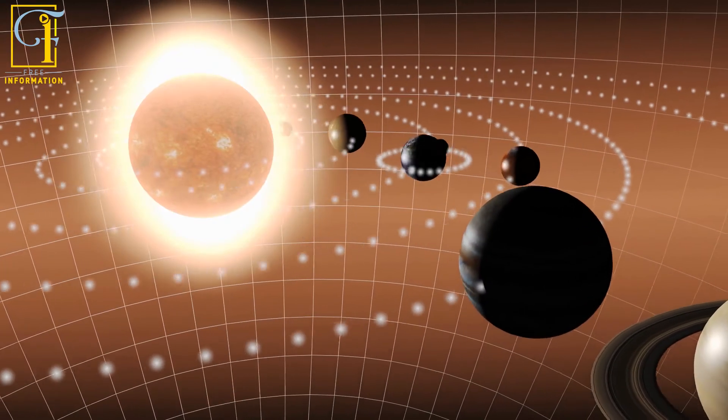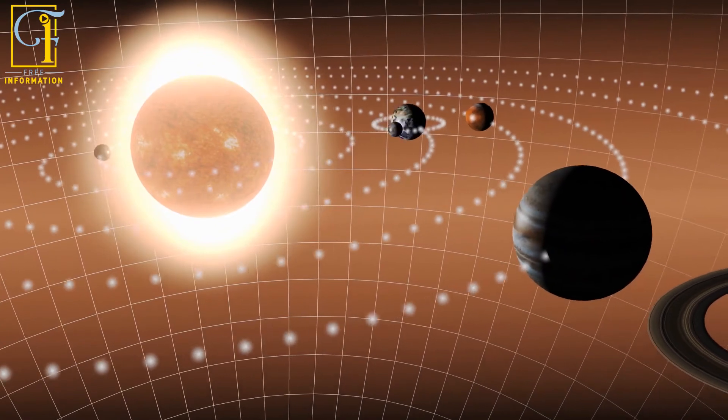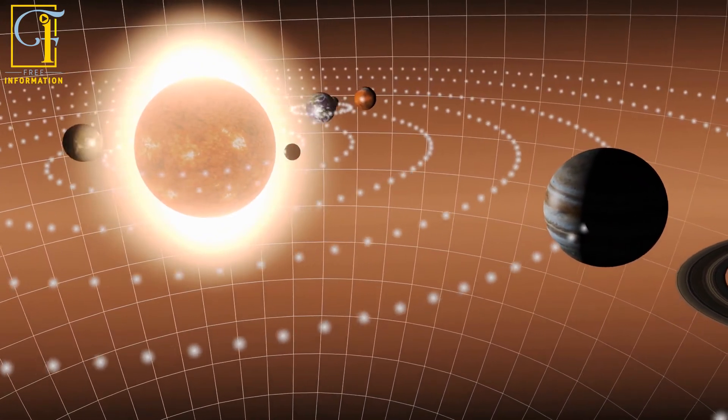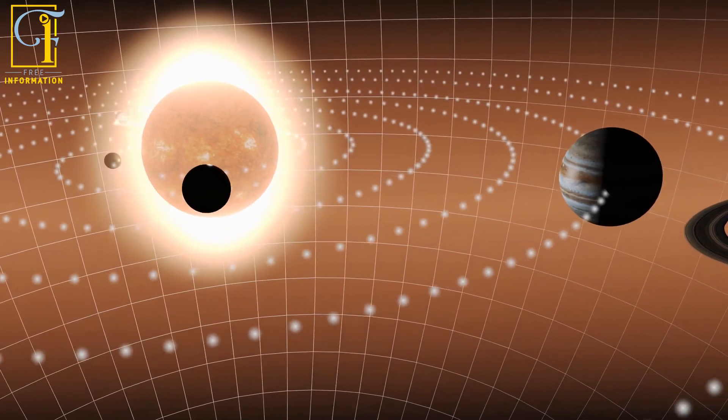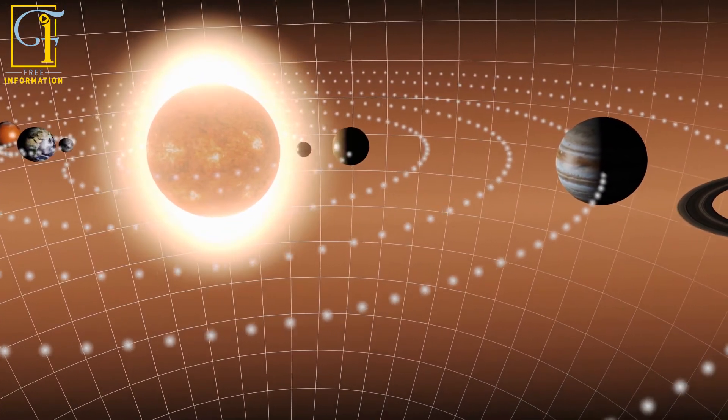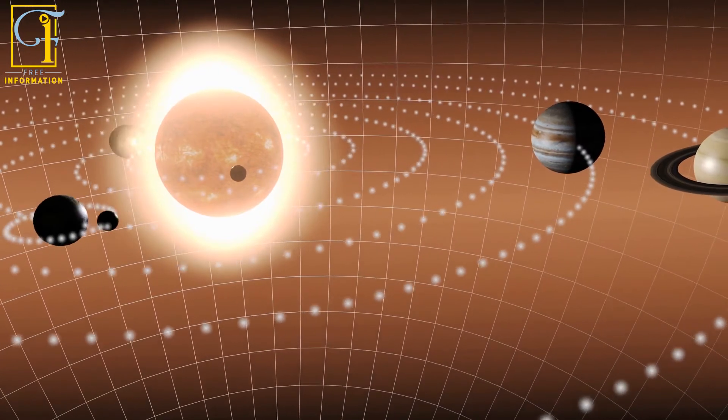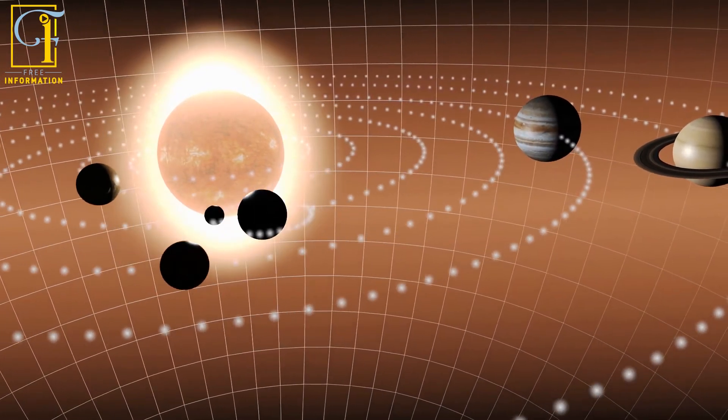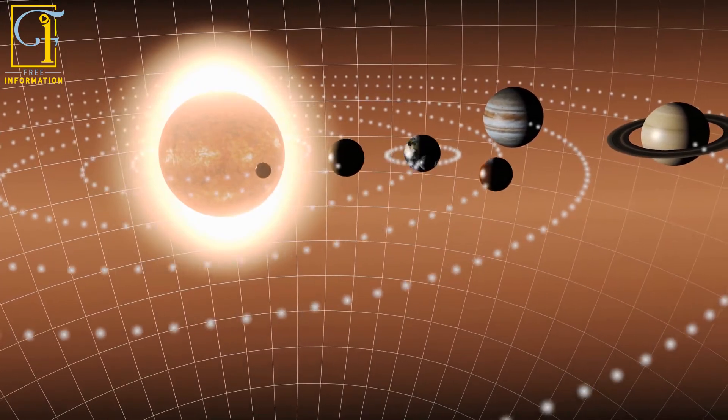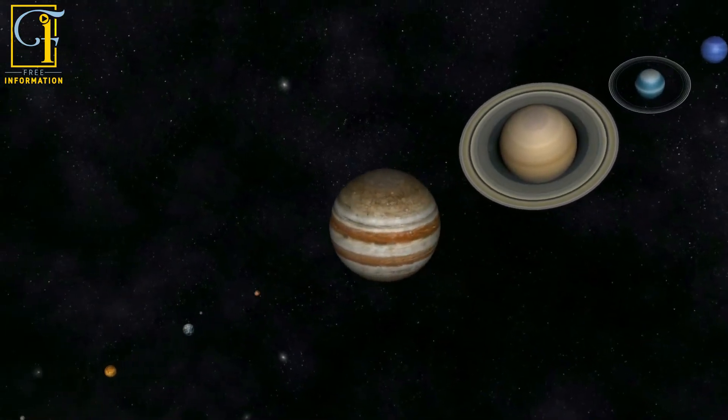Saturn is one of the four large planets in our solar system, and the size of the planet is so gigantic that it is 764 times larger than Earth. Saturn has second place in the solar system after Jupiter. The diameter of the planet is about 120,000 kilometers, considered to be 9 times larger than Earth's diameter.